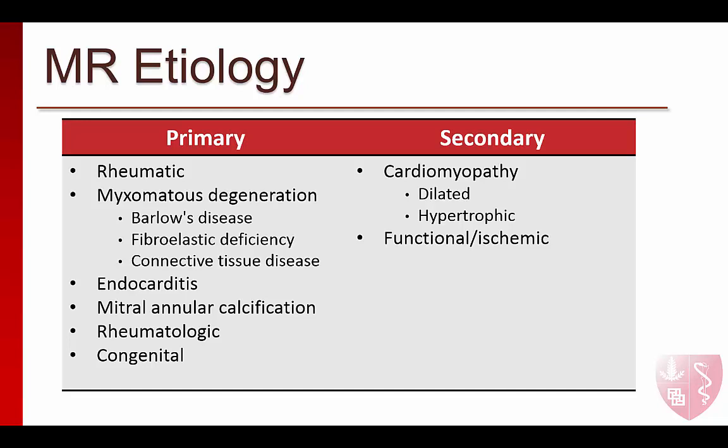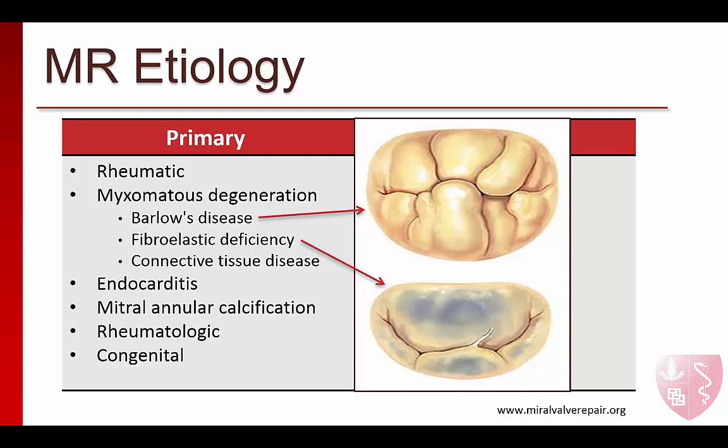Rheumatic valvular disease is the most common cause of both mitral regurgitation and stenosis in developing nations, but is much less common in the United States. Myxomatous degeneration can take several forms. The first is Barlow's disease, which is characterized by thickened, redundant valve leaflets, chordal elongation, and annular dilation. It typically presents earlier in life than fibroelastic deficiency. Fibroelastic deficiency typically involves only a single leaflet segment and often presents later in life with chordal elongation and acute rupture. Repair of Barlow's disease is typically far more challenging than that of fibroelastic deficiency.